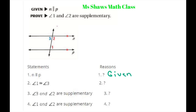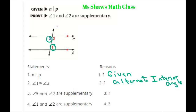Angle 1 is congruent to angle 3 — that's called the Alternate Interior Angle Theorem. And therefore, angle 3 and angle 2 are supplementary, and that is your Supplementary Angle Theorem.